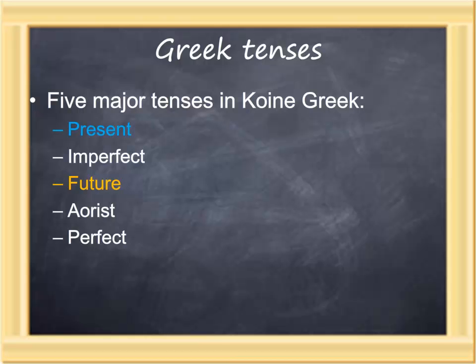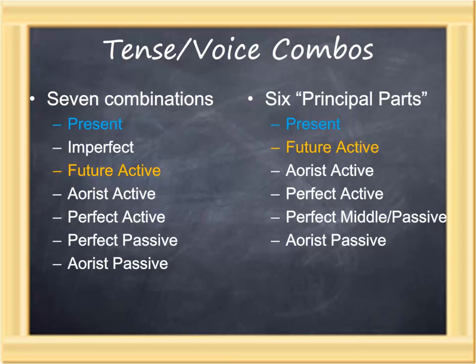When tense is combined with voice, there are seven combinations: the present tense, the imperfect tense, the future active, the aorist active, perfect active, perfect passive, and aorist passive.